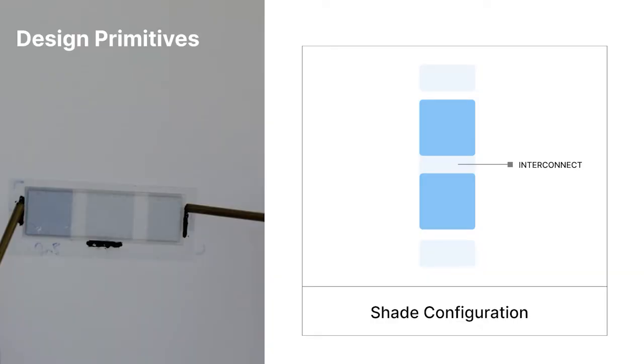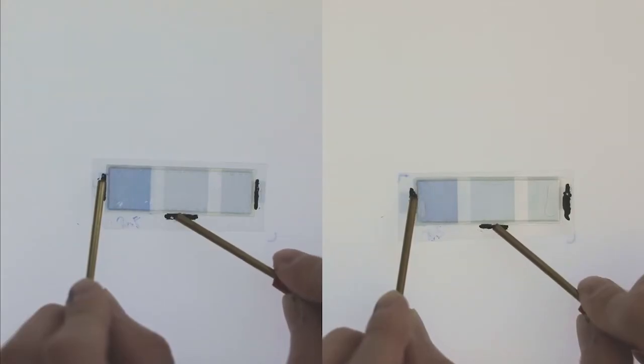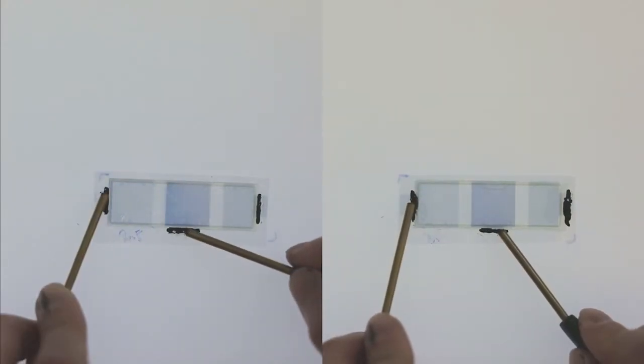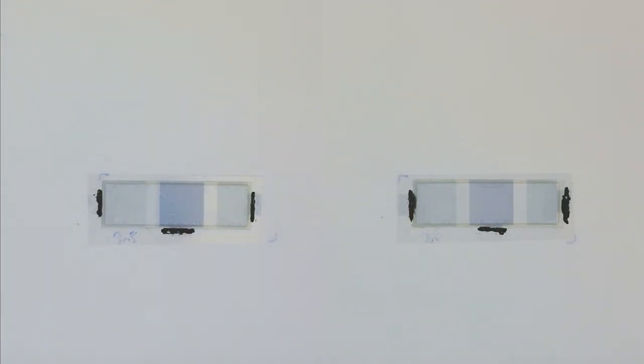The shared configuration utilizes inkjet printing to create planar interconnects with low density. In this primitive, the opacity of the interconnects governs the display transition behavior.